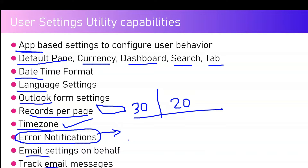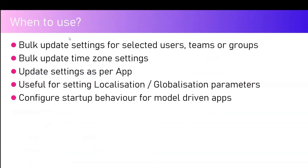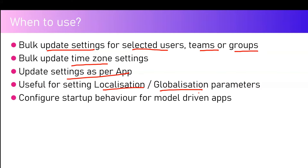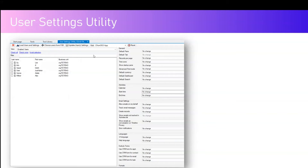There are also email settings and track email messages capabilities. When to use this tool: if you want to bulk update settings for selected users, teams, or groups, this is the tool to use. It supports bulk update of time zone settings for users in different locations or geographies. You can update settings per app, configure localization and globalization parameters all at once, and configure startup behavior for model-driven apps — such as the default pane, default tab, or number of records displayed.